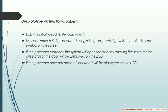The LCD will initially display 'Enter Password.' The user has to enter the 5-digit password, which will be masked by an asterisk symbol so that no one else can read the password while typing it. If the password matches the one that has already been programmed, the system will open the door by rotating the servo motor, and the status of the door will be displayed on the LCD as 'Open.' If the password does not match, 'Incorrect' will be displayed on the LCD.